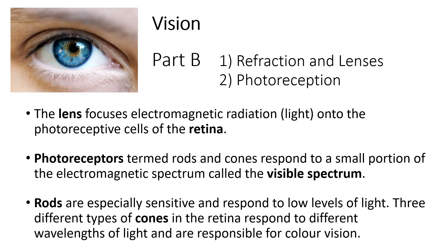Photoreceptors come in two forms: rods and cones. They're different and serve different functions. Rods are very sensitive to low levels of light and allow us to see a grayscale image in a dimly lit room or at night. Cones come in three different types and respond to three different wavelengths of light — that's where we get our color information from. The different wavelengths of light are perceived as different colors, and information from the cones is blended to give us color information.